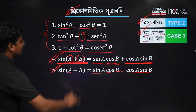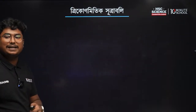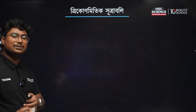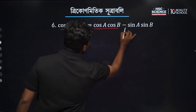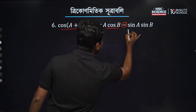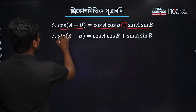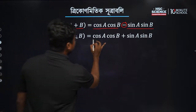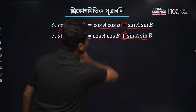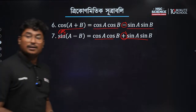Cos(a + b) equals cos a cos b minus sin a sin b. And cos(a + b) plus sin a sin b gives us the complete cosine addition formula.